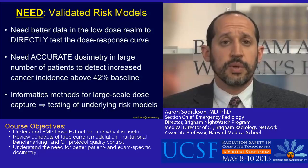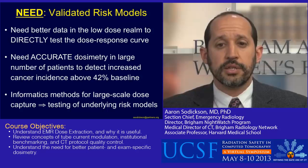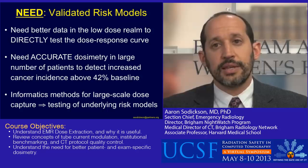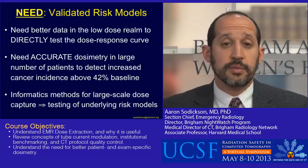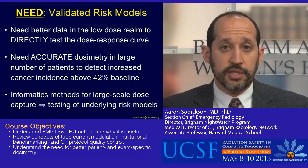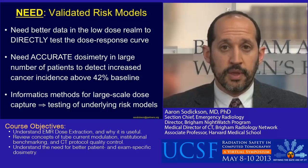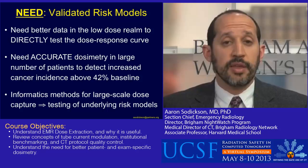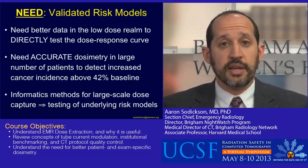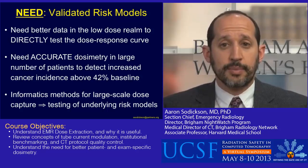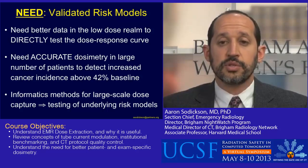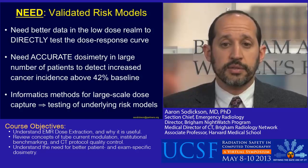To do this, we would need accurate dosimetry in a large number of patients in order to try to detect a very small increase in cancer incidence above the very large baseline cancer incidence of 42% in a U.S. population. Some of the informatics methods I'll be discussing are one way to get at this sort of large-scale dose capture, and to allow us to do some testing of our underlying risk models.